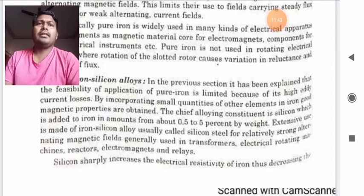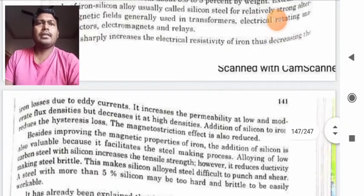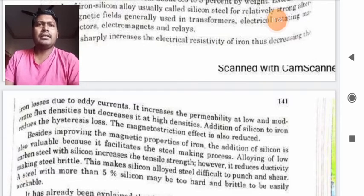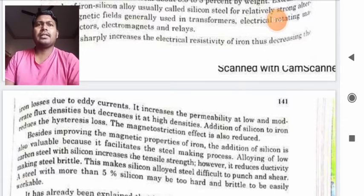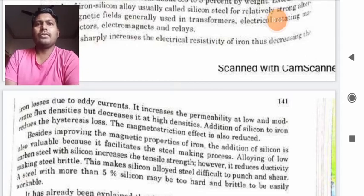Silicon sharply increases the electrical resistivity of iron. Thus, it decreases the iron loss due to ED currents. It increases the permeability at low and moderate flux densities but decreases it at high densities. Addition to silicon to iron reduces the hysteresis losses. The magnetostriction effect is also reduced.